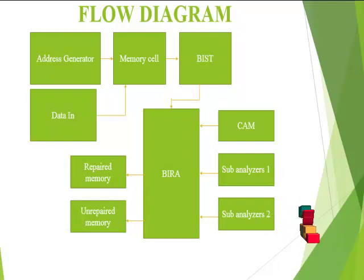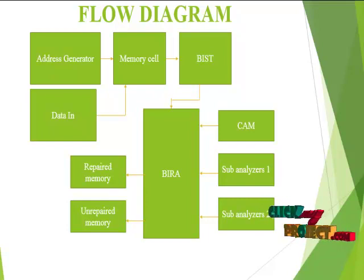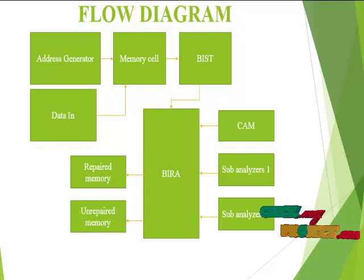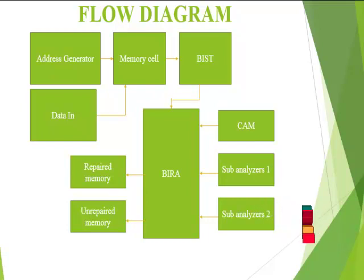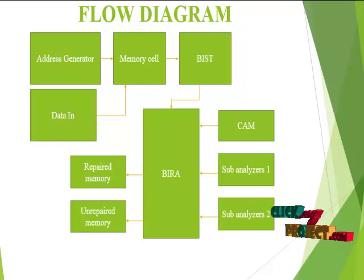We are going to see the flow diagram for our product. The address generator generates the address for the memory cell. Then the data in is given to the memory cell, which stores according to the address generator. Then the BIST module tests if there is any fault in the memory cell according to the march test algorithm. If any fault occurs, the corresponding address is sent to the built-in redundancy analysis module.